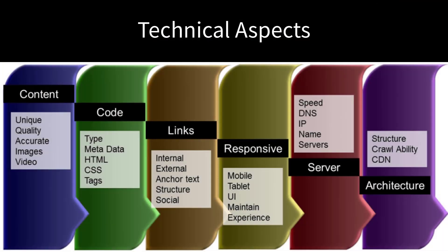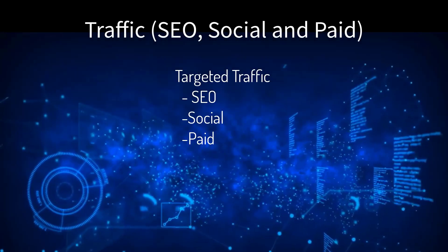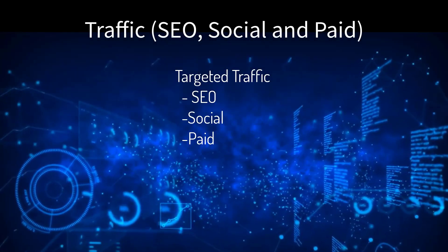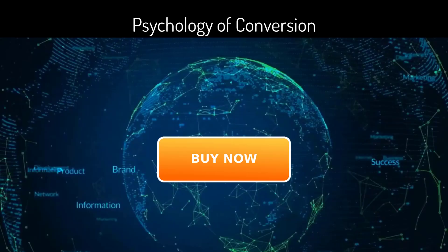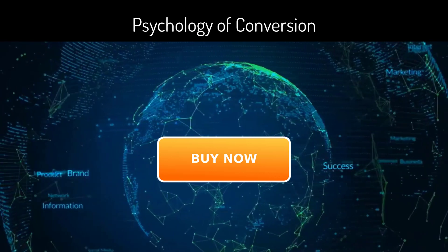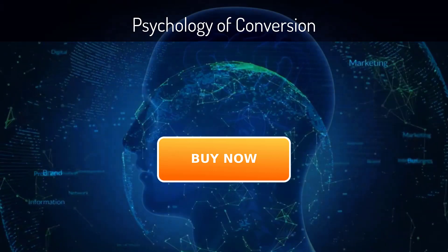Of course, all online marketing must have three elements in alignment: the technical aspects — servers, layout, code structure; the traffic — SEO, social, and paid; and the psychology of conversions.